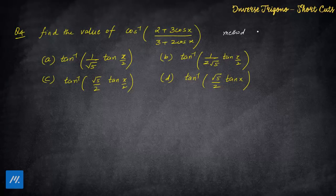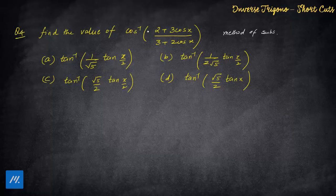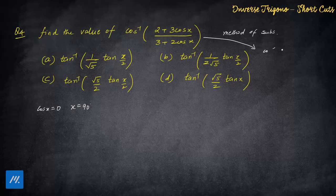Now this next question also uses method of substitution. In this category of questions, most students face difficulty. First, think about what value to put to make the question easier. We put cos x = 0, which means x = 90 degrees. The LHS then becomes cos inverse(2/3). Since all answer options are in terms of tan inverse, we convert.